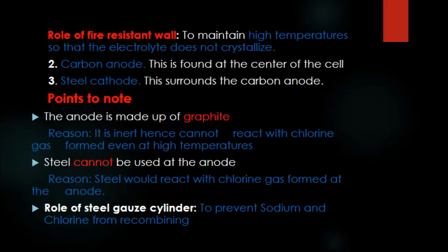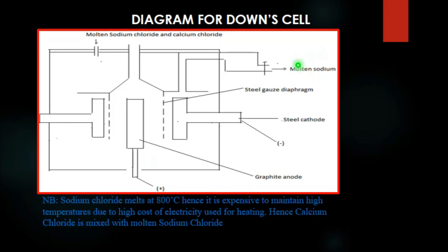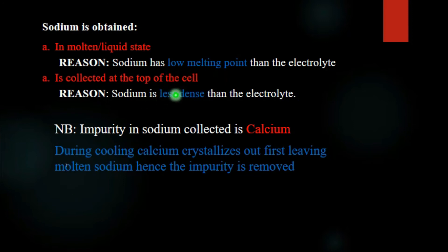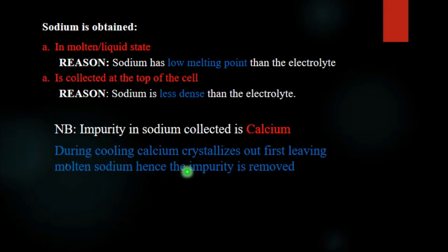Sodium is collected at the top of the cell because sodium is less dense than the electrolyte. Note that the impurity found in sodium will be calcium. To remove this impurity, during cooling, calcium crystallizes out first, leaving the molten sodium behind. So to remove calcium impurity from sodium, you allow crystallization to take place.